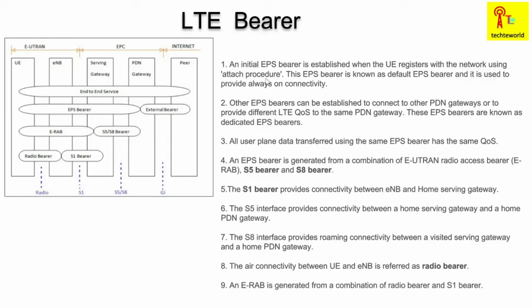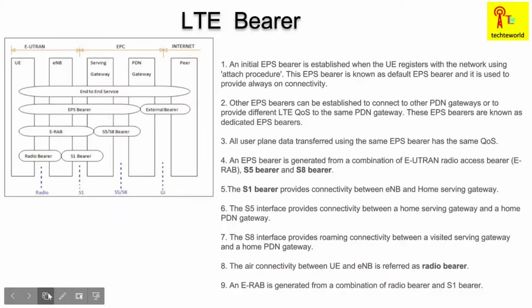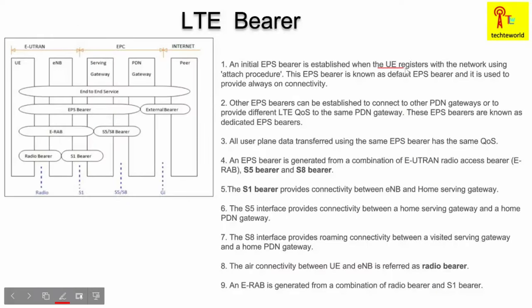The question is: when is this bearer established in the network in LTE? The initial EPS bearer is established when the UE registers with the network using the attach procedure. During the initial attach procedure, the initial EPS bearer is established, and this EPS bearer is called the default EPS bearer. It is used to always provide some connectivity — whenever the UE wants to connect and transfer any signaling or data message, this default EPS bearer will be used.